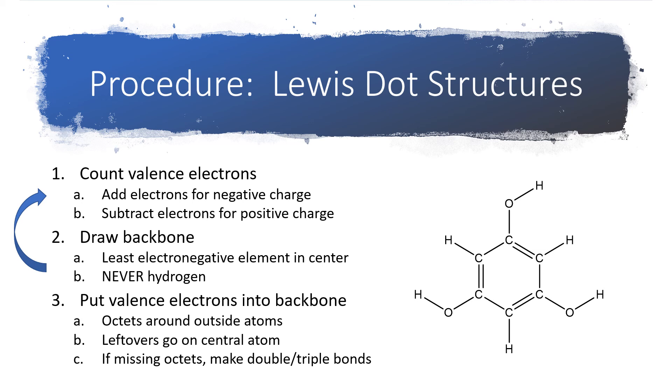And if we're missing octets, we're going to have to take a lone pair off of an outside atom and slide it in to be a bonding pair, which will make double or triple bonds. We're going to slide an outside atom's lone pair into a bonding position. So you want to keep it on the atom that it started with, but you want to just slide it over a little bit so it's now shared with an atom that's not quite at an octet yet.